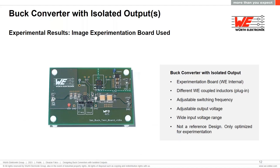Now let's see some experimental results. For information, the results shown in the next slides were obtained with an experimentation board of a buck converter with one isolated output used internally at Würth Elektronik. It allows easy probing of important voltage nodes and measurement of primary and secondary winding currents. Different coupled inductors can be plugged in on separate PCBs, and it allows setting the switching frequency between 200 kHz and 1 MHz and adjusting the output voltage as desired. Note: this is not a reference design — it is a board optimized only for easy experimentation and changing specifications.